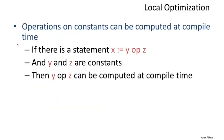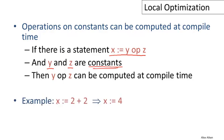One of the most important and useful local optimizations is to compute the results of operations at compile time rather than at runtime if the arguments are known at compile time. For example, if we have a three-address instruction x equals Y op Z, and it happens that Y and Z are both constants — immediate values — then we can actually compute the result of the right-hand side at compile time and replace this by an assignment to a constant.